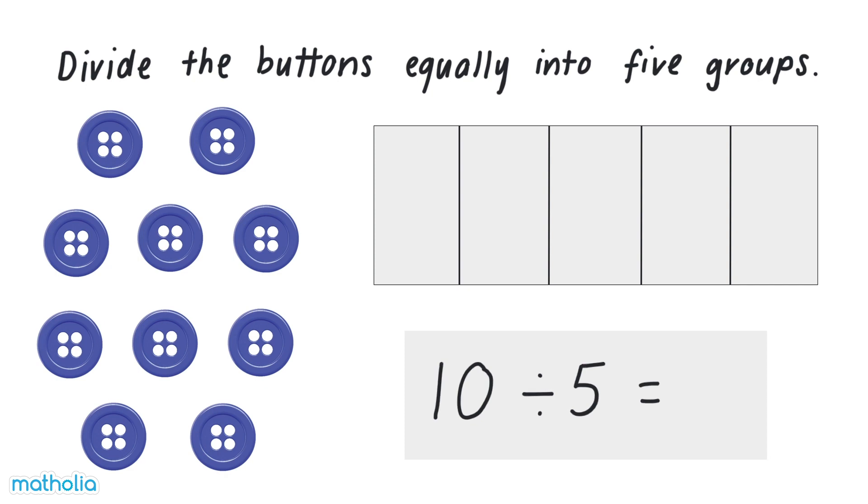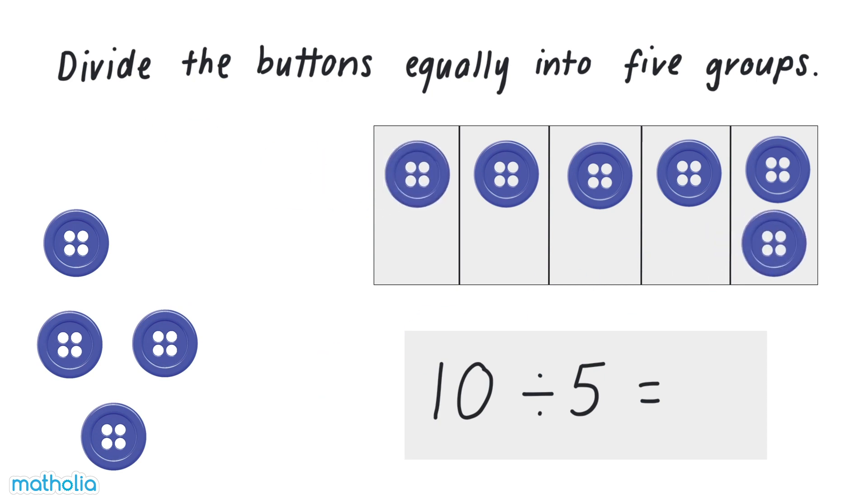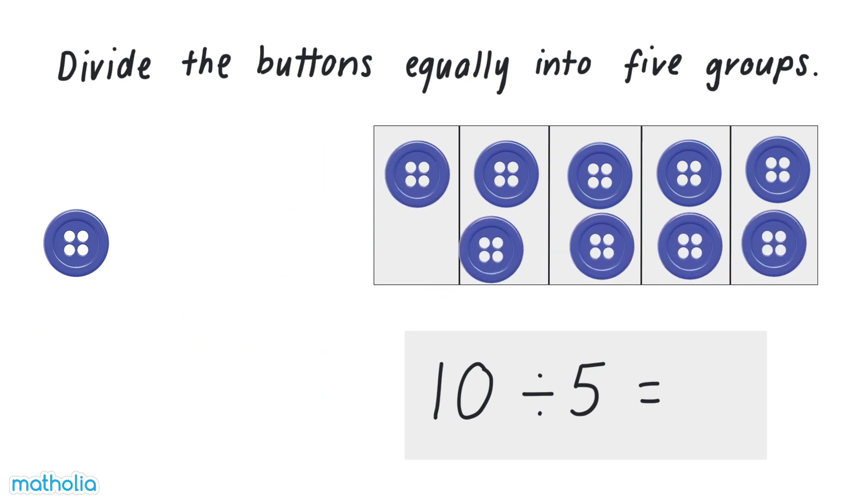Let's draw five empty groups and place one button into each group until we've used up all the buttons. We've divided the buttons equally into five groups. There are two buttons in each group, so ten divided by five equals two.